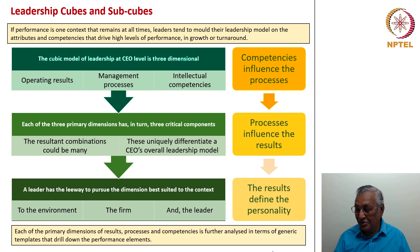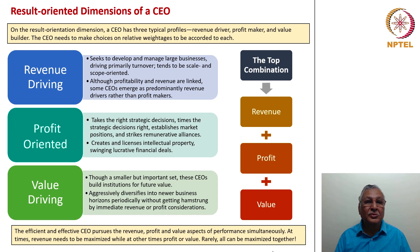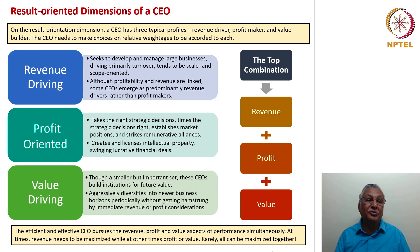What are the result-oriented dimensions of a CEO? Three profiles: revenue driver, profit orientation and value-driving orientation — a revenue driver, profit maker and value builder. The CEO needs to make choices on relative weightages to be accorded to each. Under certain circumstances revenue needs to be the primary driver; under others, profit making; and under others, the overall value of the company has to be built up.